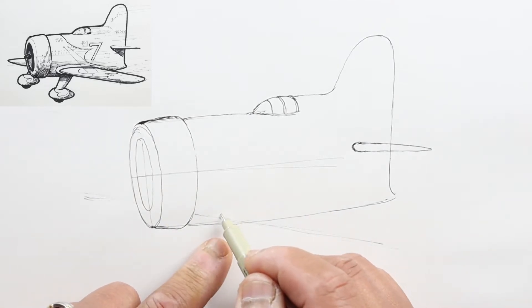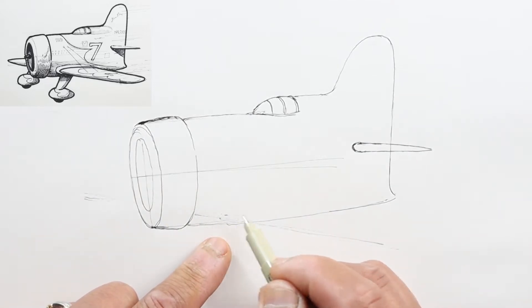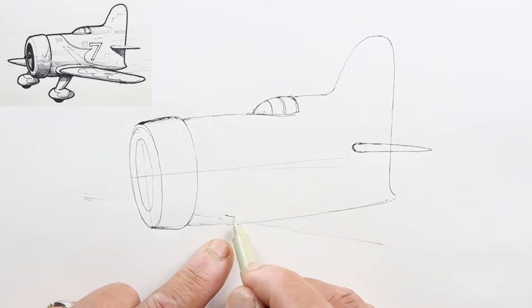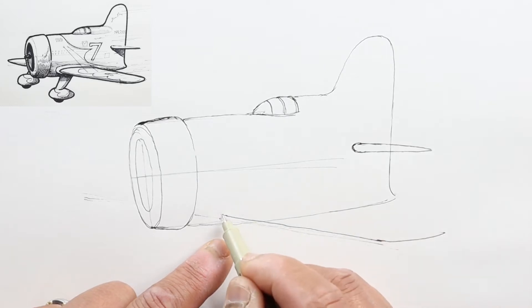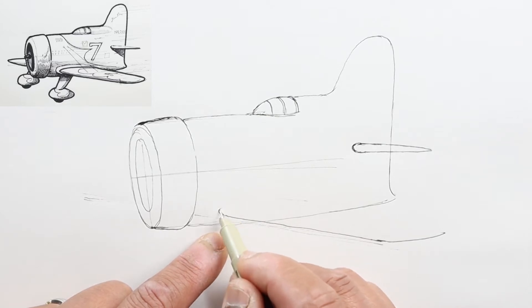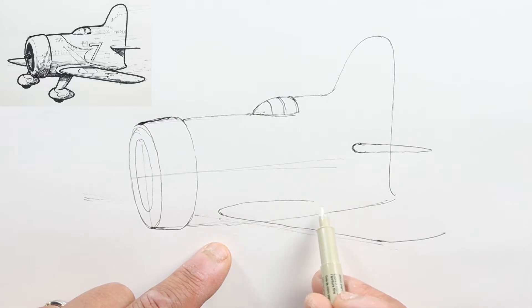Starting at the leading edge here, let's draw a line that goes out and start leveling it out to show some thickness to this wing and some width. Then the part that attaches to the body will be curved like this.